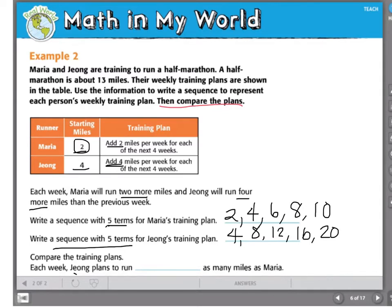But now they ask me to compare the training plans. Let's look at what they have in common. Maria begins with two and adds two each week. Young begins with four and adds four each week. For week one, Maria has two, Young has four. For week two, Maria has four, Young has eight. Week three, six and twelve. The difference between these two training plans is always times two.